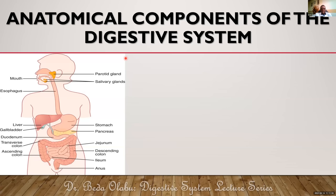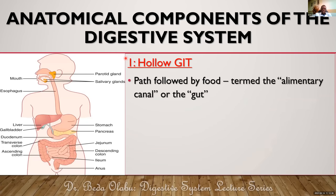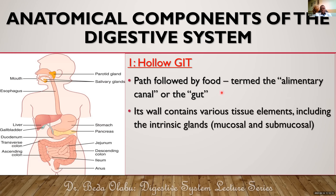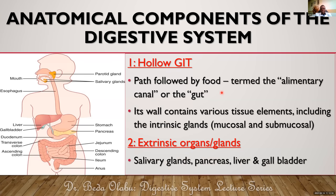To orient ourselves, we divide the components of the digestive system into two: the holo-GIT and the extrinsic organs. The holo-GIT is the part followed by food, and its wall contains tissue elements including intrinsic glands — either within the mucosa or submucosa. The extrinsic organs, including salivary glands, pancreas, liver, and biliary system, empty into the holo-GIT and will be covered in a separate lecture.